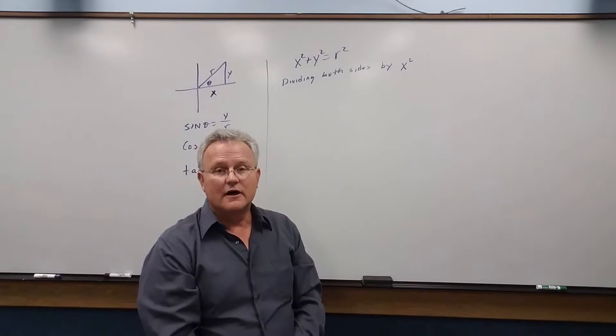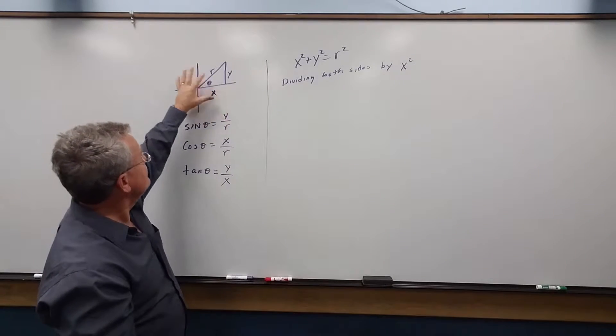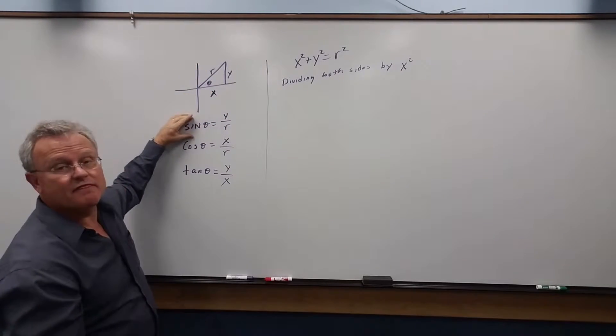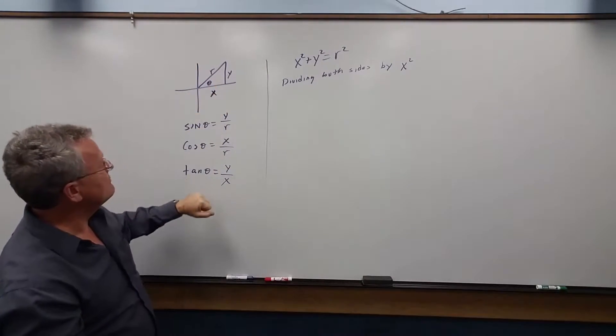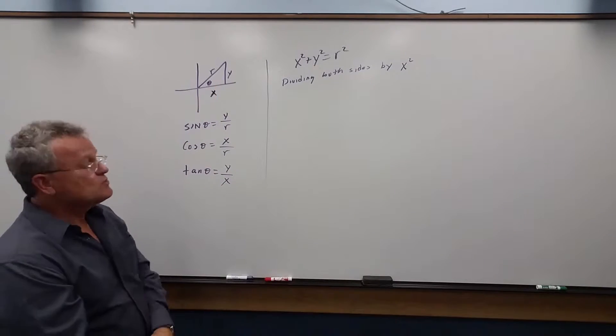In this video we're going to derive another Pythagorean relationship using the same relationship here. Sine theta, by definition, is y over r, cosine is x over r, tangent is y over x.